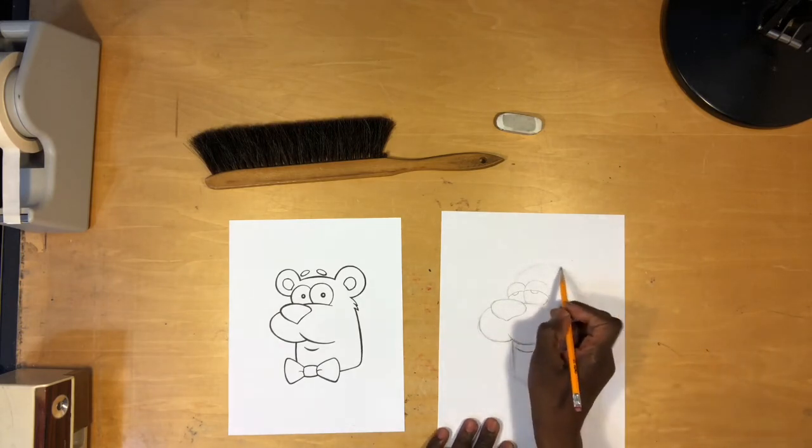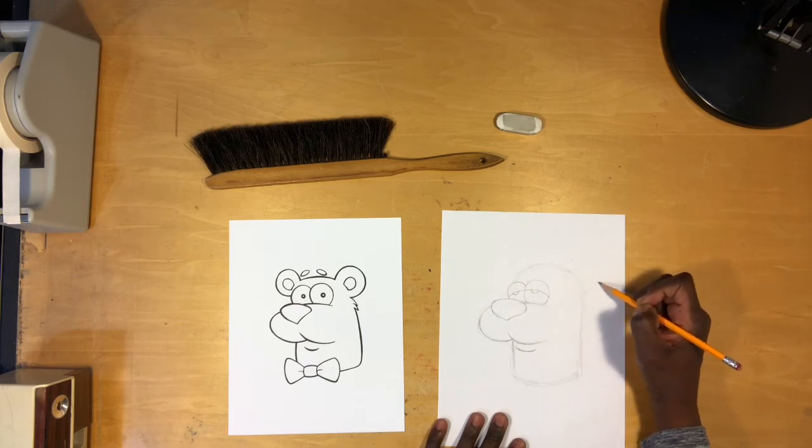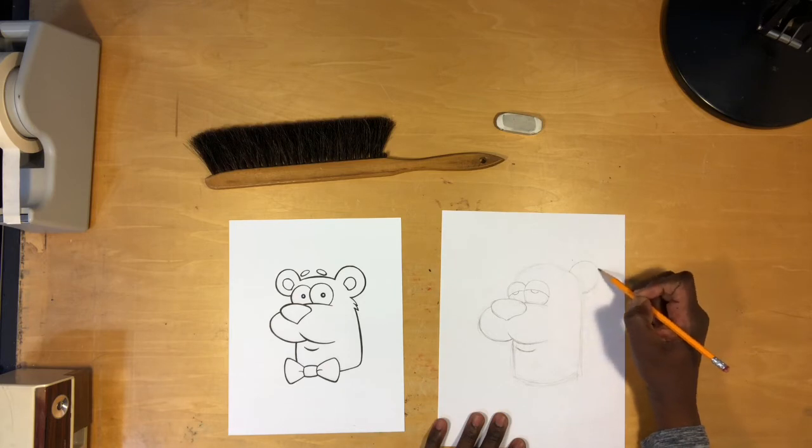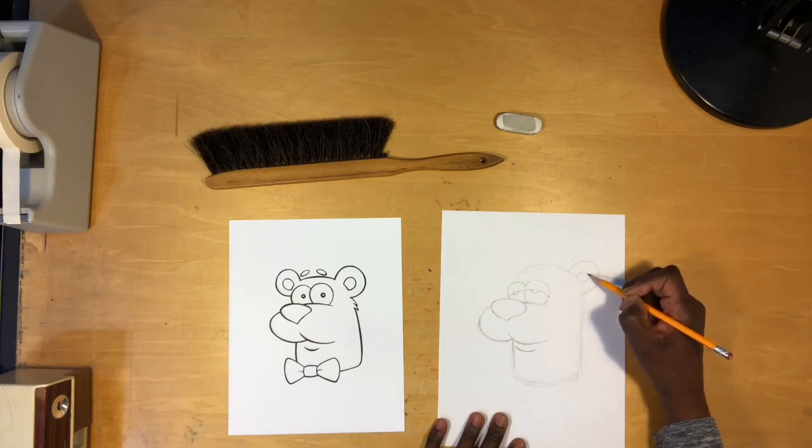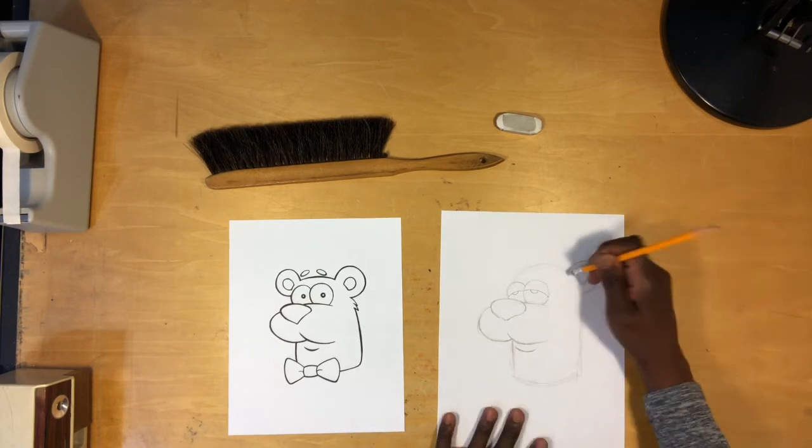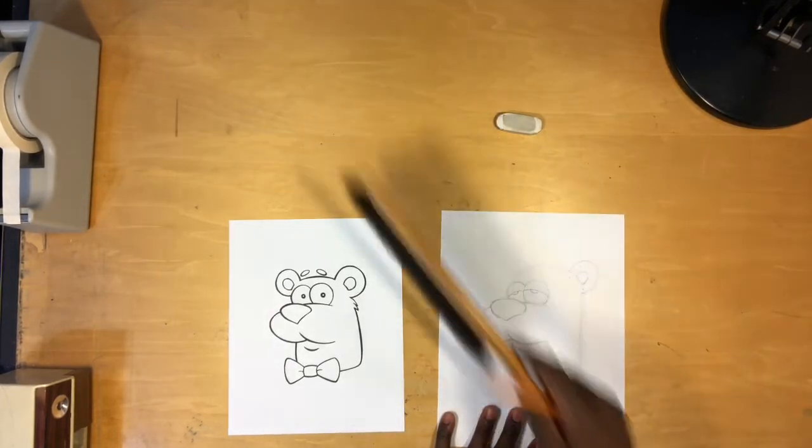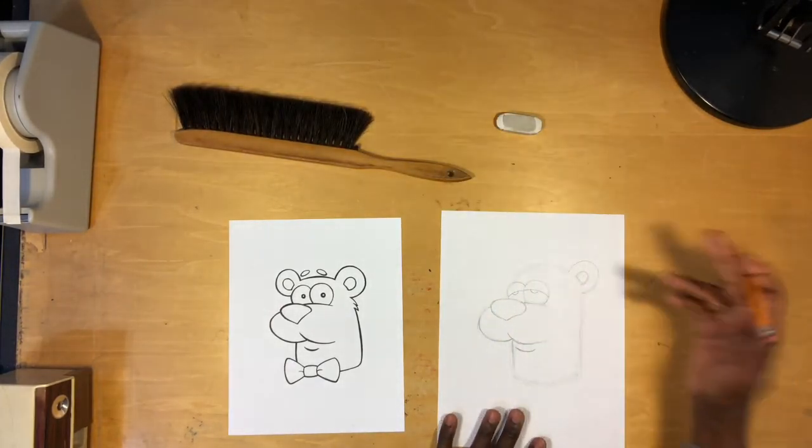Now let's draw his ears. I always tell people to focus not on the subject matter as much as the shape that makes up the subject matter. In this instance they look like letter C's. See, I've drawn a letter C outside, a bigger one, and then a smaller one inside. Now I'm going to erase this part of the original line from the larger oval that we drew.